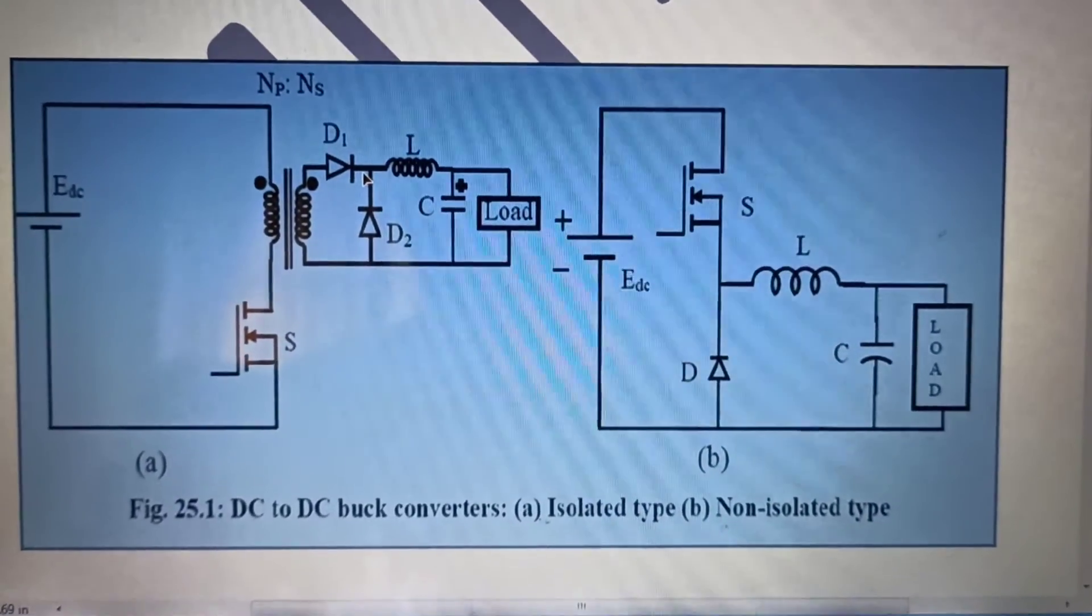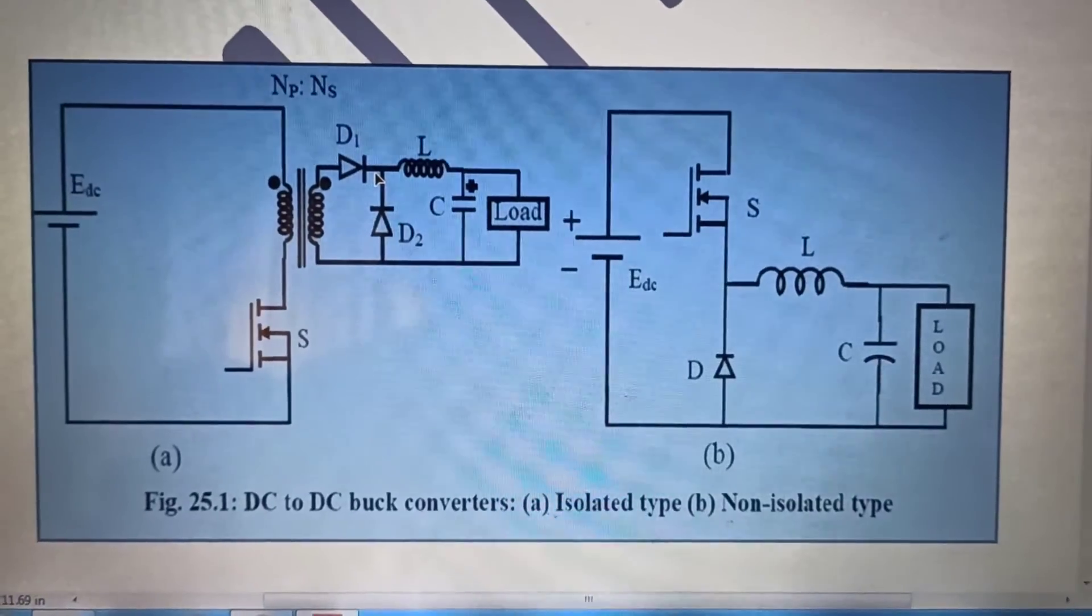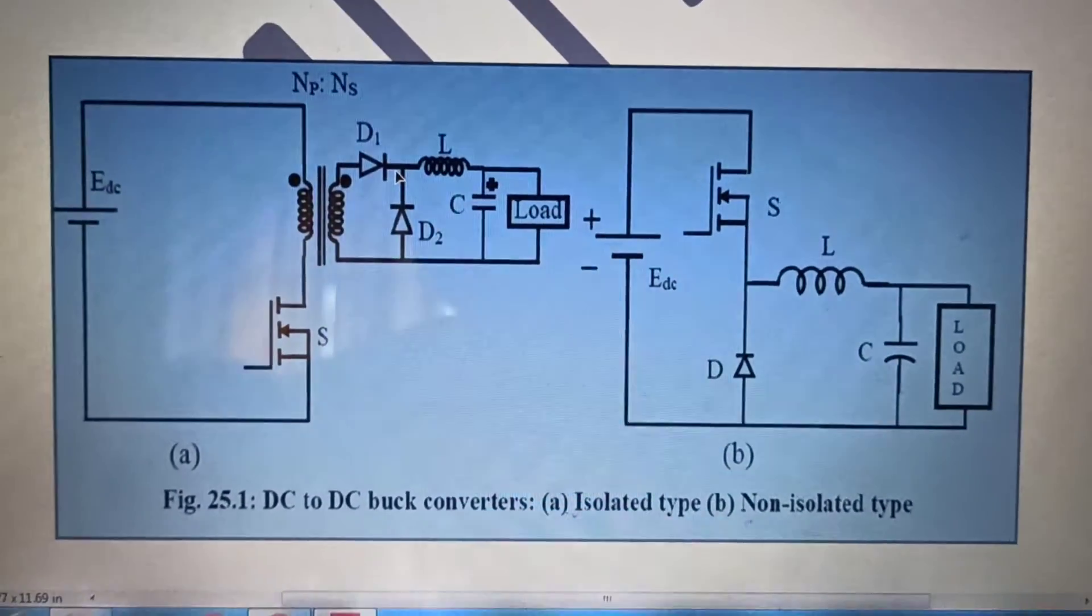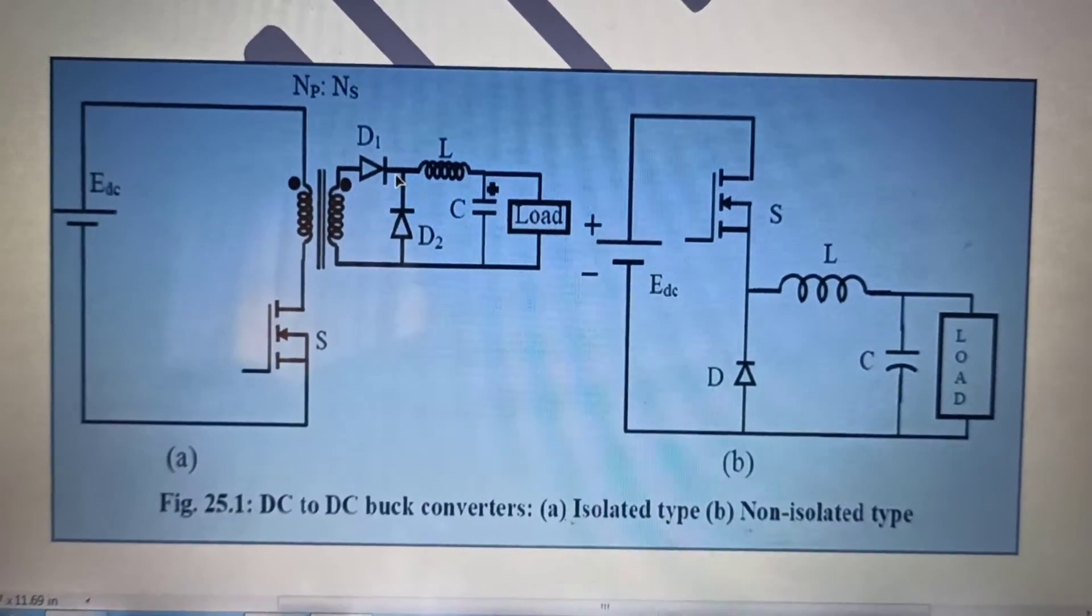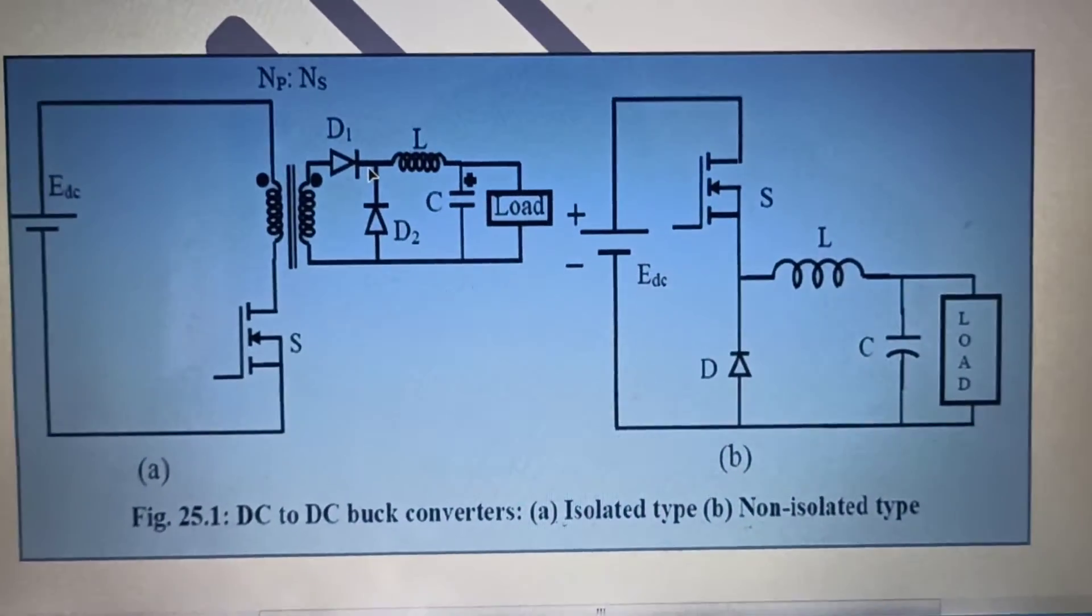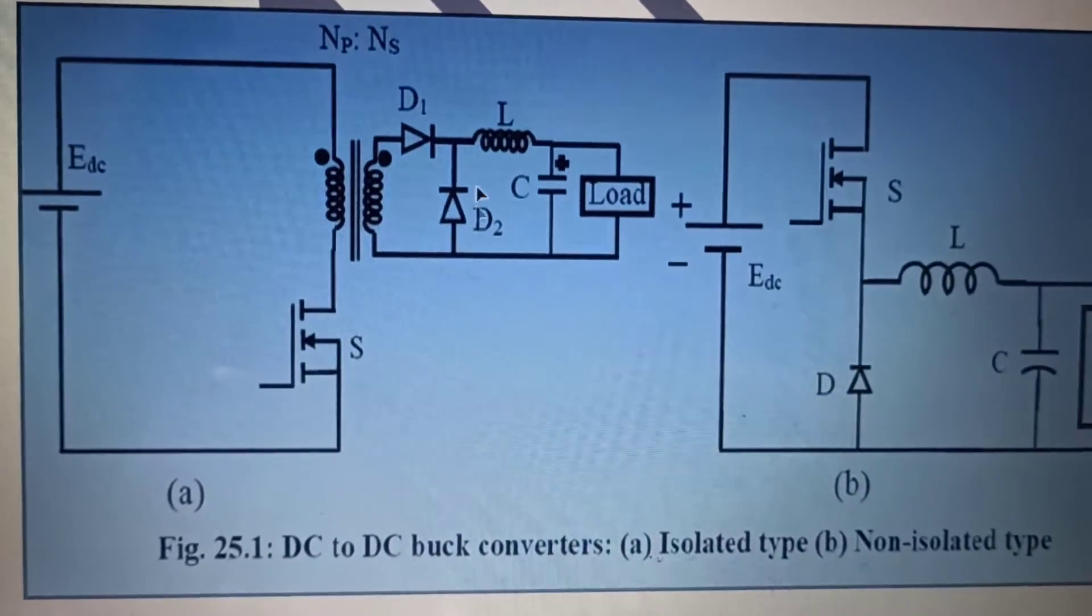Now I would like to share one more thing. Now this is the isolated type. Obviously isolation has its own benefits. Like any damage which occurs in this part of the circuit. For example. Consider this part. If any damage happens in this part.